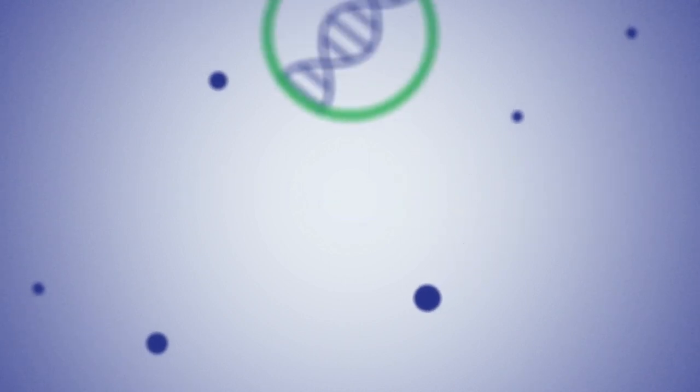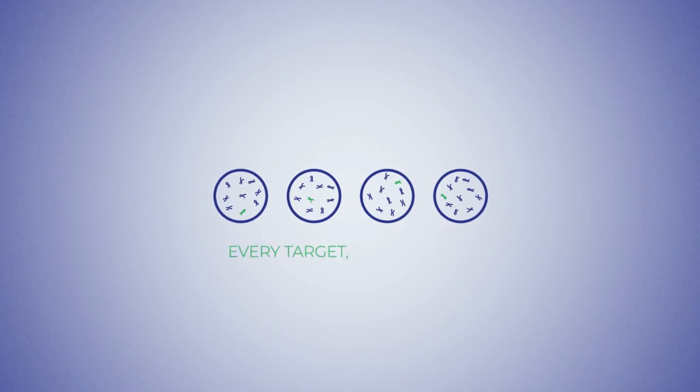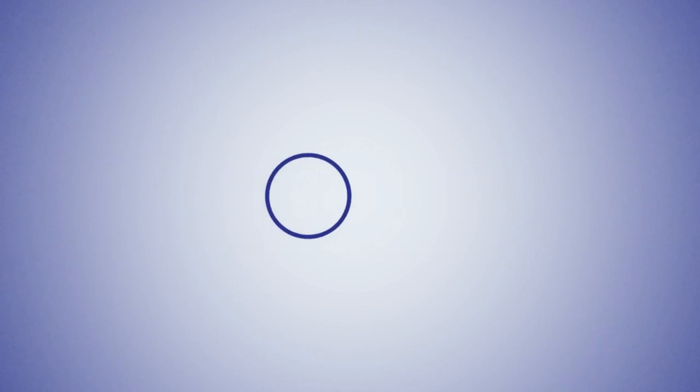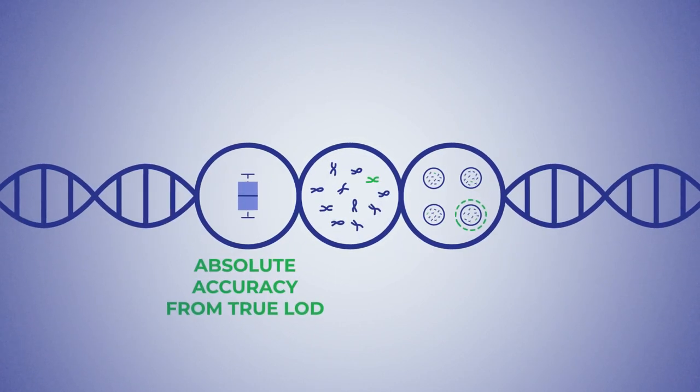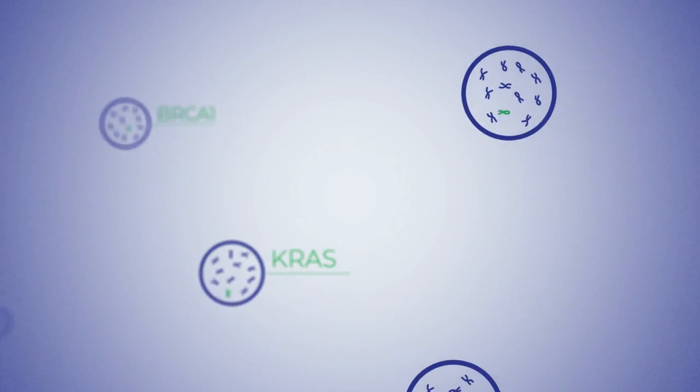In short, AccuGenomics' spike-in internal standards offer simple quality control for every target in every sample, which leads to absolute accuracy from true LOD, improved informatics, and cost-effective sequencing workflows, all with your current platform, panels, and reagents.